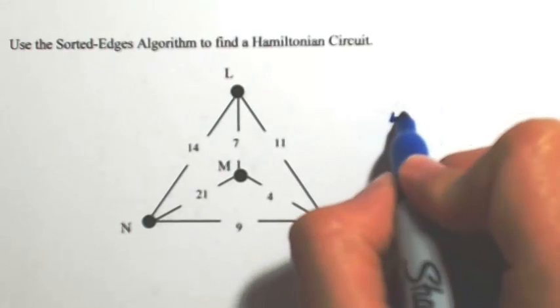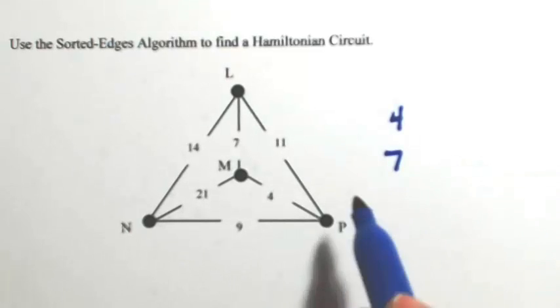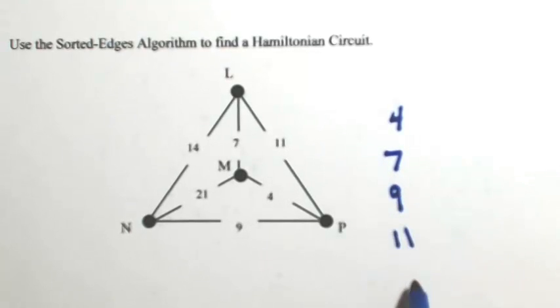So the least one is a 4. And then we have a 7, a 9, 11, 14, and 21.